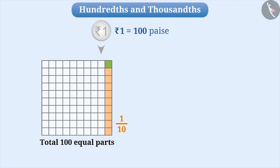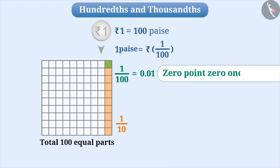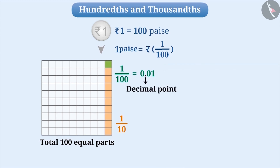If we talk about 1 part, this will be the one hundredth part of a whole square. That means 1 paise is a hundredth part of 1 rupee. This is a fraction whose numerator is 1 and the denominator is 100. A fraction with denominator 100 can be written in decimal form. One hundredth can be written as 0.01. Here, there are two places after the decimal point.